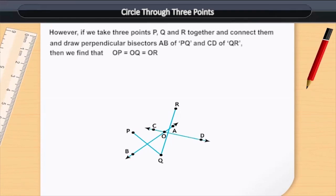then we find that OP is equal to OQ is equal to OR, where O is that point where both the perpendicular bisectors meet.